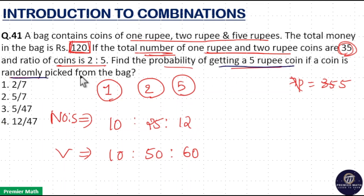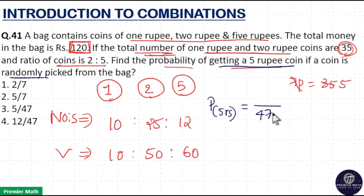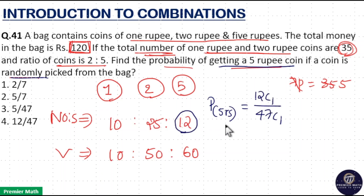Now picking a coin randomly from the bag, the probability of getting a five rupee coin: there are total 47 coins in the bag, so picking one coin out of 47, the total outcome is 47C1. Chances of getting a five rupee coin — there are 12 five rupee coins in the bag, so favorable outcome is 12C1. Therefore probability equals 12 by 47. Option 4 is your answer.